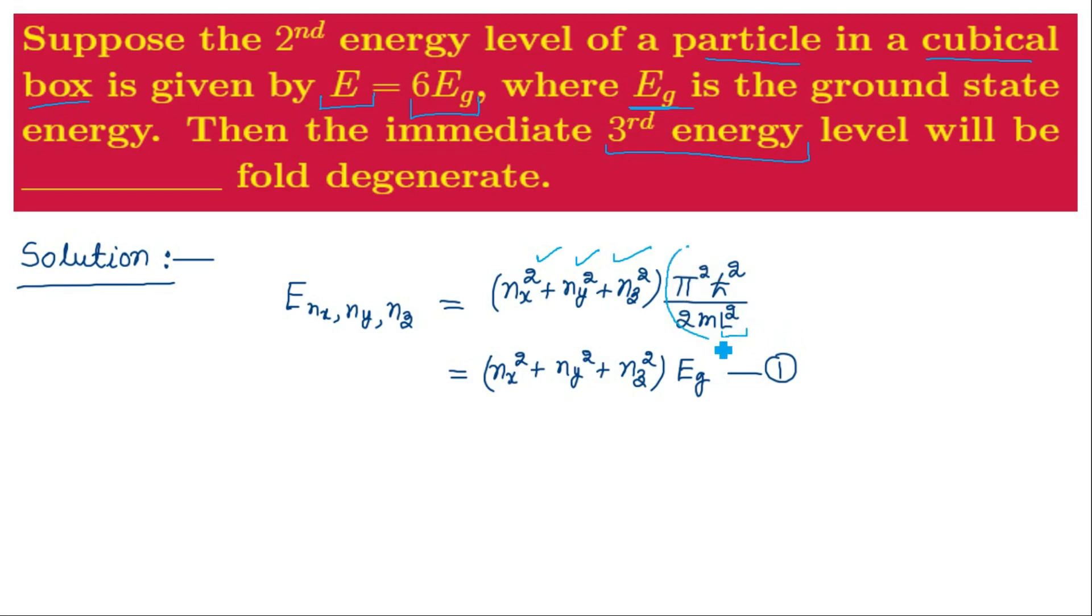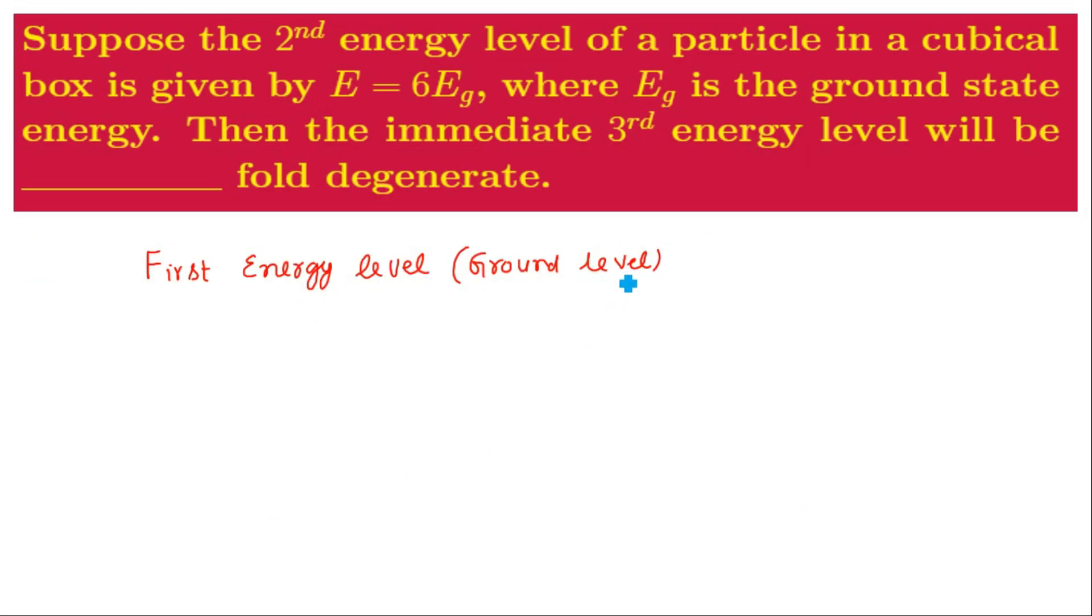We call this constant factor to be EG, and NX, NY, NZ are the quantum numbers which can take values 1, 2, 3, 4, etc. For the first energy level, which is also called ground level, we must have the minimum possible energy eigenvalue, which is obtained with the minimum value of all three quantum numbers, that is NX, NY, and NZ.